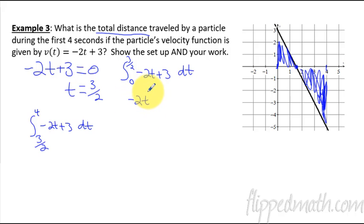Okay, so let's do this. Negative two t squared divided by two plus three t. We're going to evaluate that from zero to three halves. And then we'll do the same thing here. So I'm going to simplify this. I get negative t squared plus three t. Evaluate from zero to three halves. This one will be negative t squared plus three t. Evaluate from three halves. Sorry about my t's and my pluses. They look identical there. I've got to be careful. Evaluate from three over two to four.